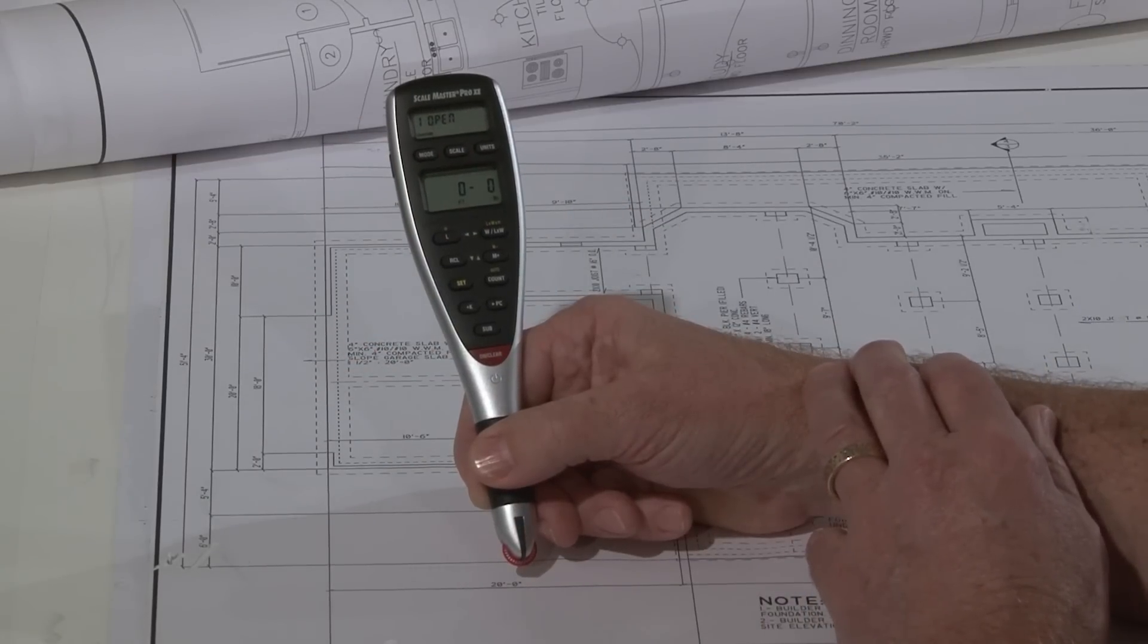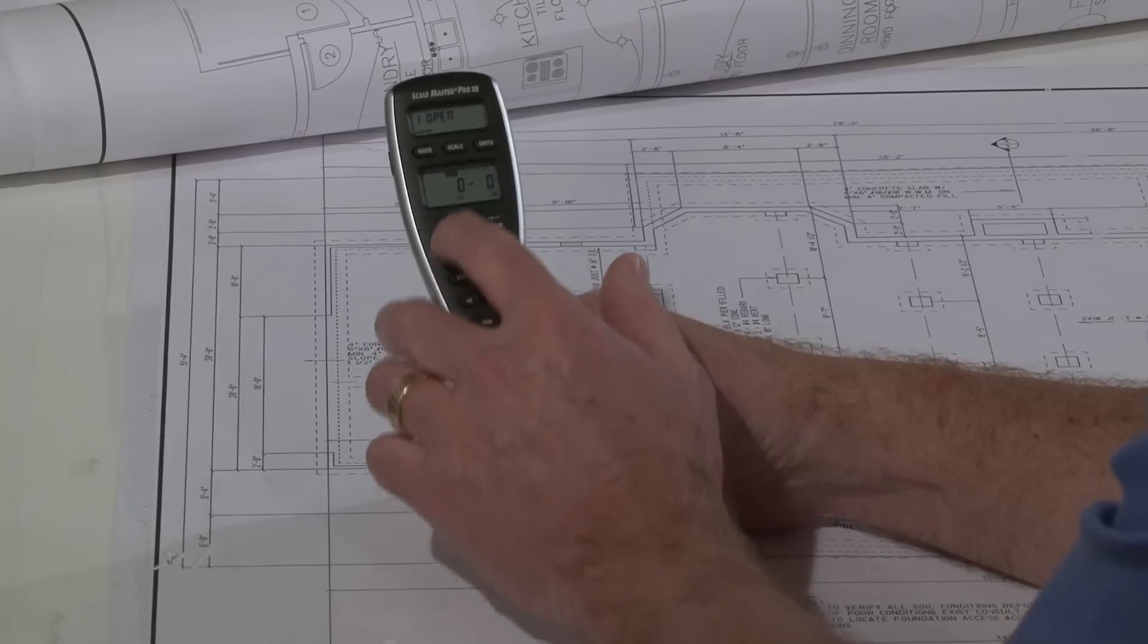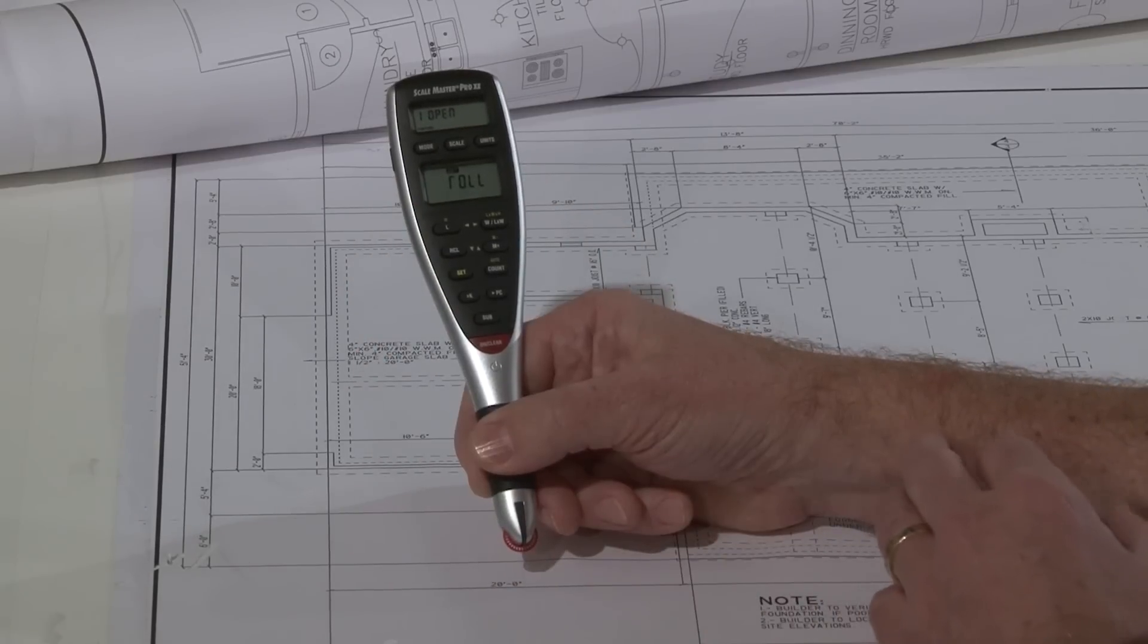Next, hit set and scale to indicate you want to set a scale. It prompts you to go ahead and roll something.